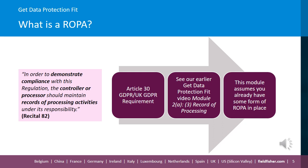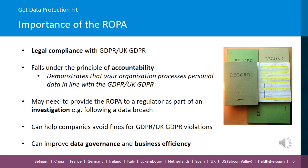If you would like more information on ROPAs and how to create one, you can take a look at our earlier Get Data Protection Fit video on this. For this module, we will assume you already have some form of ROPA in place. It is a legal requirement under the GDPR to document your processing activities. Taking stock of what information you have, where it is and what you do with it, makes it much easier for you to improve your information governance and comply with other aspects of data protection law. It is a clear way to show what you are doing in line with the accountability principle.